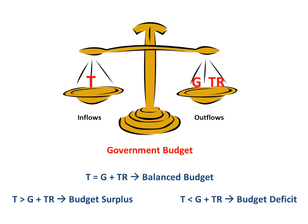If you want to find the size of the budget surplus or budget deficit, you simply look at the difference of this inequality. If taxes are greater than government spending and transfer payments by say two trillion dollars, we'd have a two trillion dollar budget surplus. If taxes were less than government purchases and transfer payments by say five trillion dollars, we'd have a budget deficit of five trillion dollars.